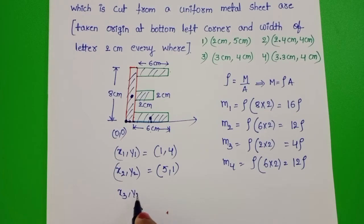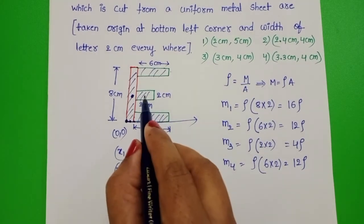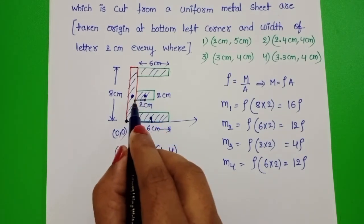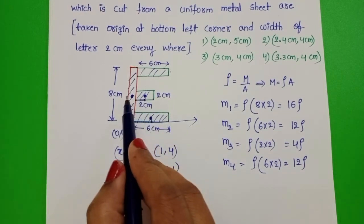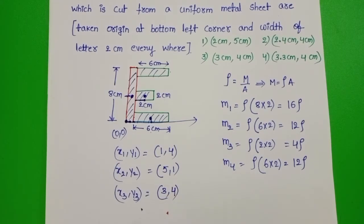x3, y3 equals - this is position of center of mass. This is 1 cm, which is 2 plus 1, equals 3. x equals 3 and y is up to here 4 cm. So 3, 4.